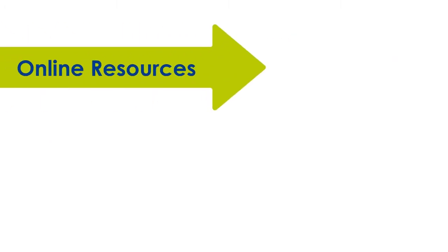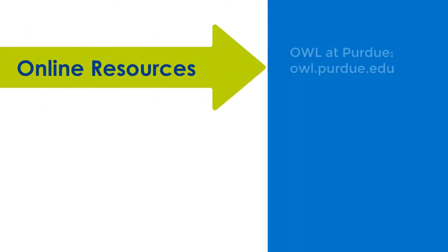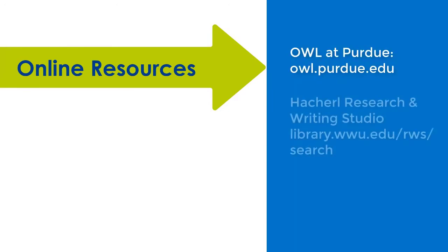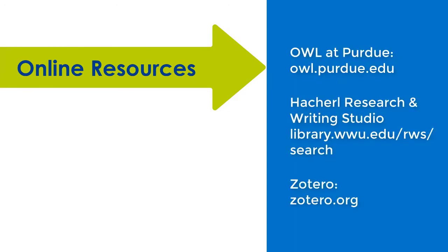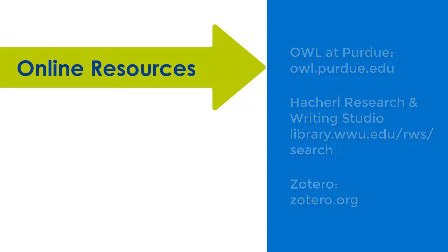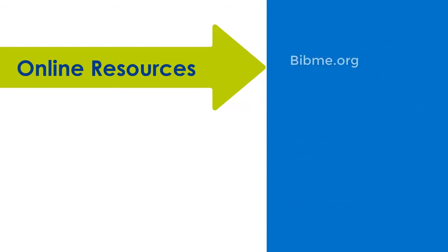You can find a lot of helpful information on citation styles online. The resources on the Purdue University Online Writing Lab, or Purdue OWL, are especially good. And while it's fine to use a citation generator, you need to proofread what comes out of those. Mistakes are not uncommon.